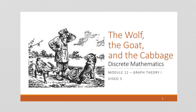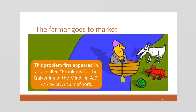In this video, we're going to look at a graph theory application. We're going to create a graph to solve a very traditional puzzle called The Wolf, the Goat, and the Cabbage. This puzzle actually first appeared in 775 A.D. in a set called 'Problems for the Quickening of the Mind' by St. Alcuin of York, which is kind of cool.